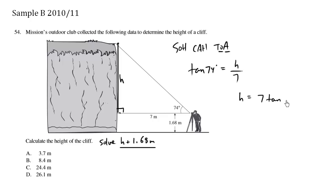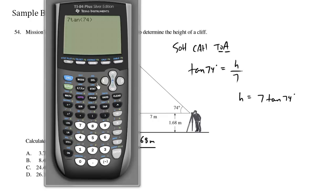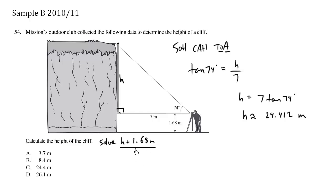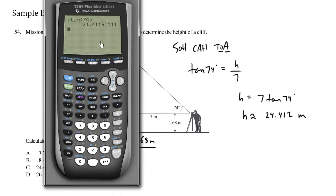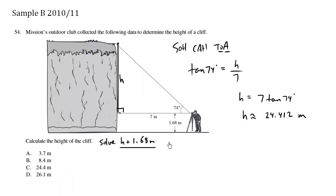Multiply both sides by 7, we get h equals 7 tan 74 degrees. Using our calculator, 7 tan 74 degrees, not radians, is approximately 24.412 meters. The question is asking for h plus 1.68, so we take this answer plus 1.68, which equals 26.1 meters.